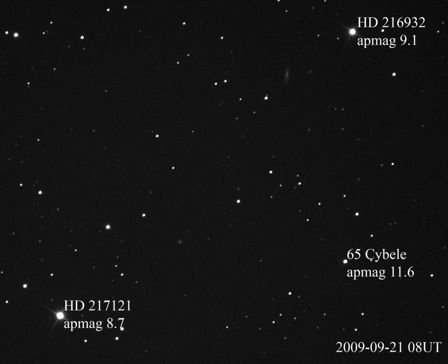The apparent magnitude of an astronomical object is a number that measures its brightness as seen by an observer on Earth. The magnitude scale is logarithmic: a difference of 1 in magnitude corresponds to a change in brightness by a factor of the fifth root of 100, or about 2.512. The brighter an object appears, the lower its magnitude value — an inverse relation — with the brightest astronomical objects having negative apparent magnitudes, for example Sirius at −1.46.